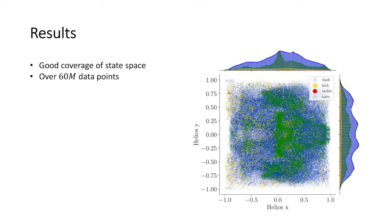Our analysis shows that our pipeline generates data that covers well the state space of the problem. The 1,400 matches with the single neural net design results in over 60 million data points.